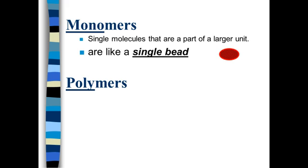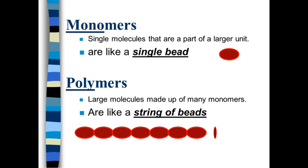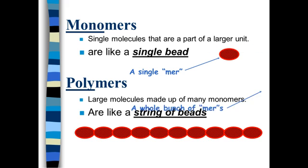So a single molecule that is a part of something larger, we call a monomer. One analogy I use a lot to think of monomers is they are kind of like a bead. So if you have a single bead, you have a monomer. Now when you put those beads together into something larger, the prefix poly means many. And so when we put those things together into a larger piece, then we have a string of beads, or we have a polymer.